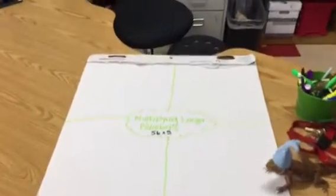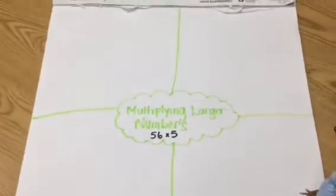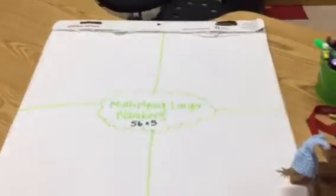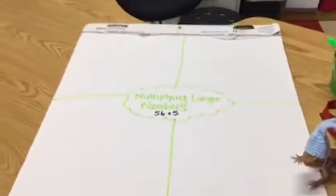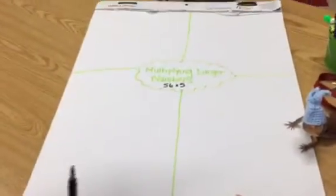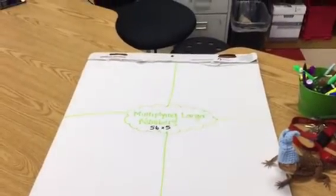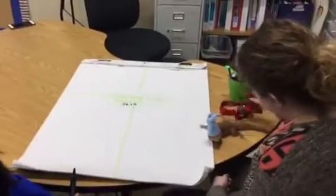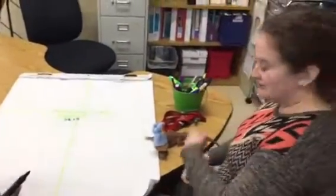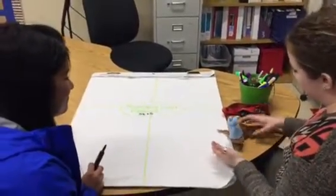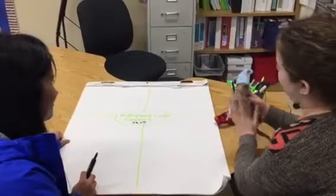Today we're going to be learning about multiplying larger numbers Ms. Huddle. So we're going to be looking at two digit numbers multiplied by one digit numbers. Alright, well Ms. Huddle first let's think of a situation where we might have to do a multiplication problem like 56 times 5 because I love connecting math to our real lives.